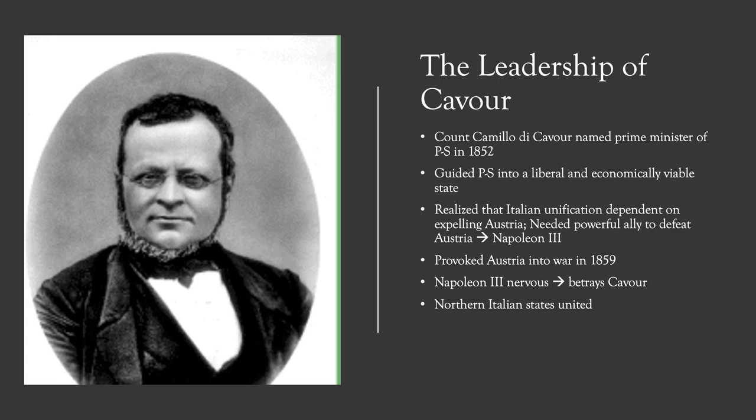Cavour provoked Austria into war in 1859, with Austria on one side and France with Piedmont-Sardinia on the other. France and Piedmont-Sardinia won the first two battles against Austria, but they did not completely defeat Austria because Austria still had the potential to turn this small war into a lengthy conflict. These victories had inspired revolutionary uprisings across Italy, especially in the northern states of Lombardy, Venezia, Modena, Parma, Tuscany, and Romagna — Italy was already showing significant movement towards unification.